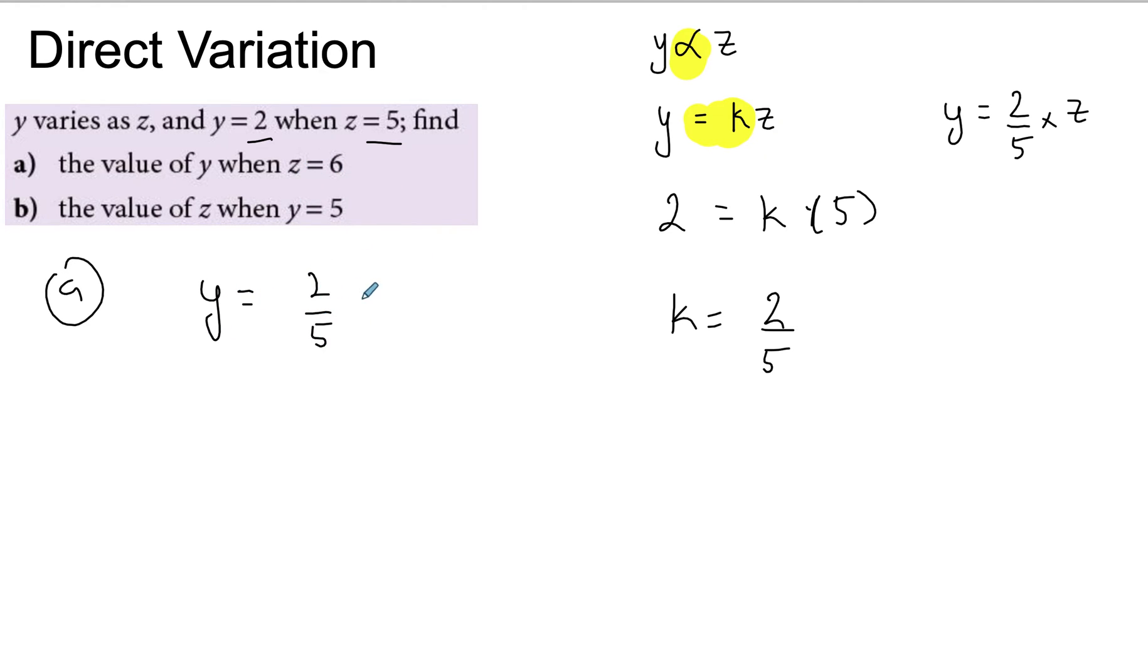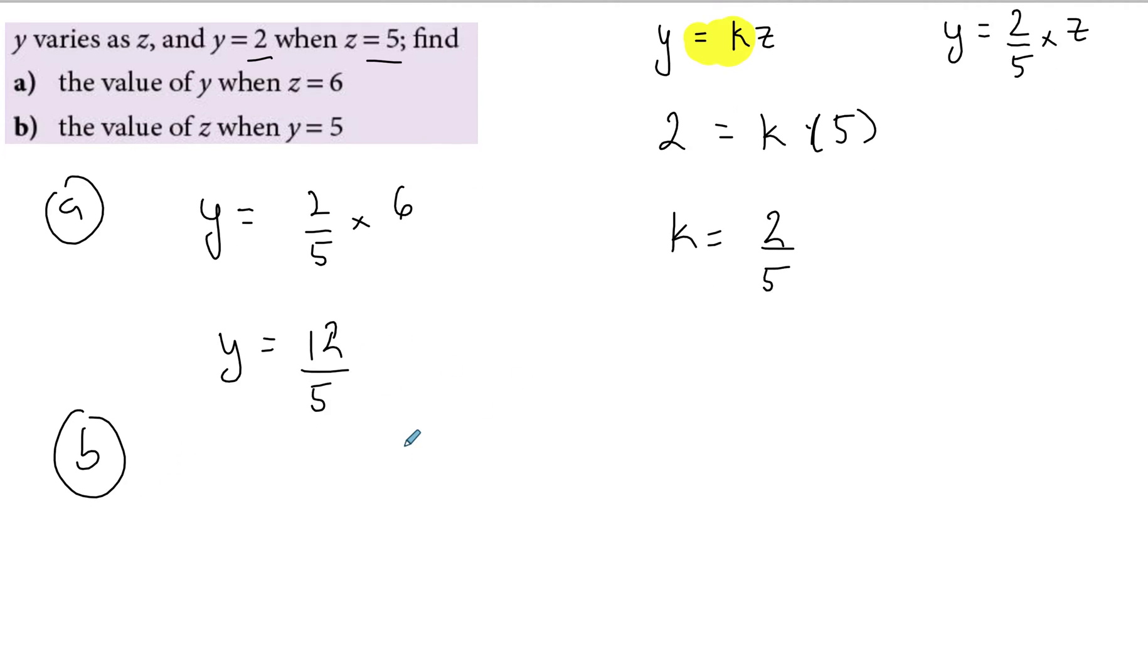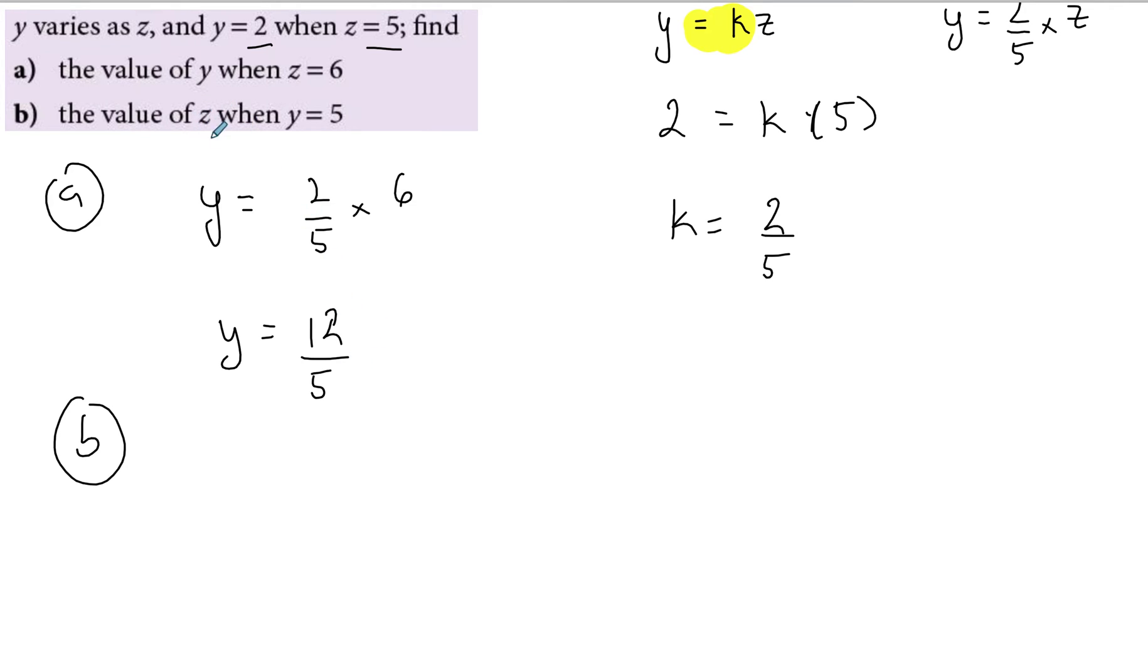times z. So now if I want to solve part a, I need to find y when z is equal to 6. I'll just go 2 over 5 times 6, and that will just be 12 over 5. And you could leave it as a fraction, you could leave it as a mixed number, it's completely up to you unless the question specifies a specific form.